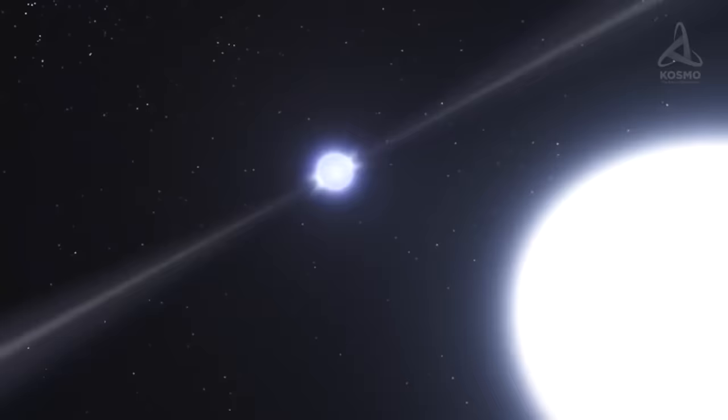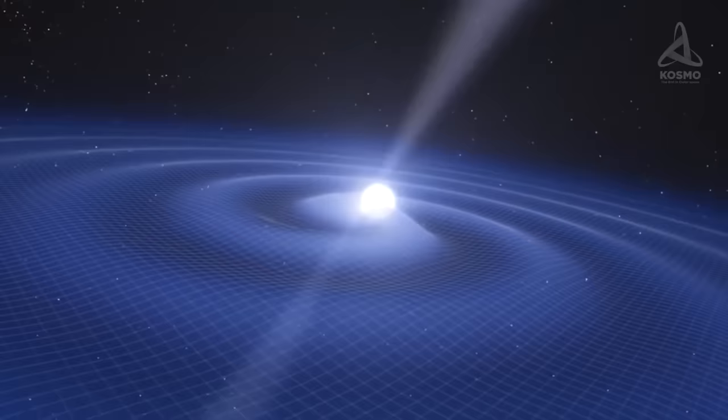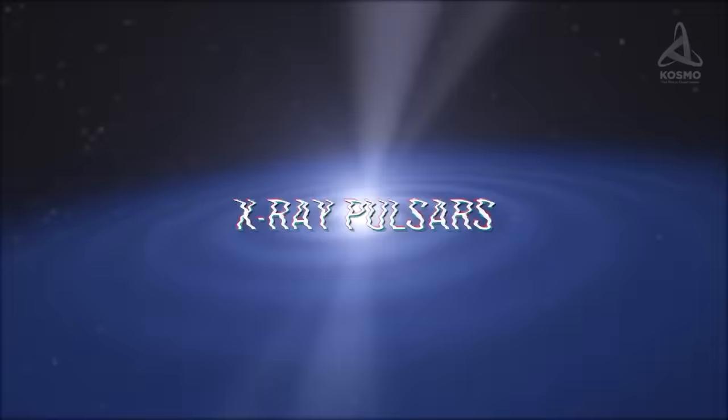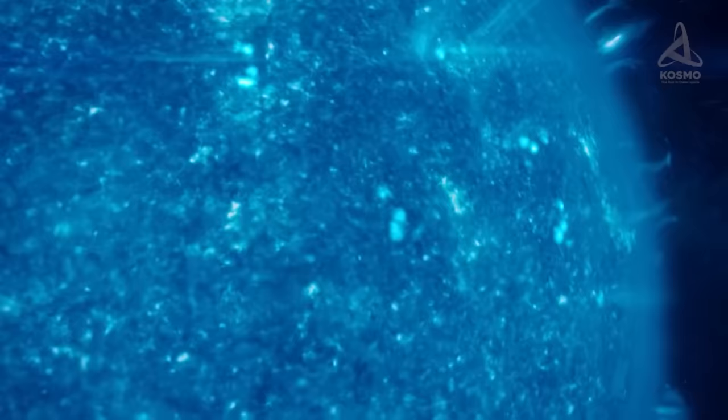After pulsars were first detected, other pulsating sources of similar nature were registered by astronomers. They were described as powerful flares of regular intermittent X-ray emissions. Thus they got their name, X-ray pulsars. X-ray pulsars are also highly magnetized neutron stars, but unlike radio pulsars, which use their own rotational energy, X-ray pulsars are powered by accretion disks.